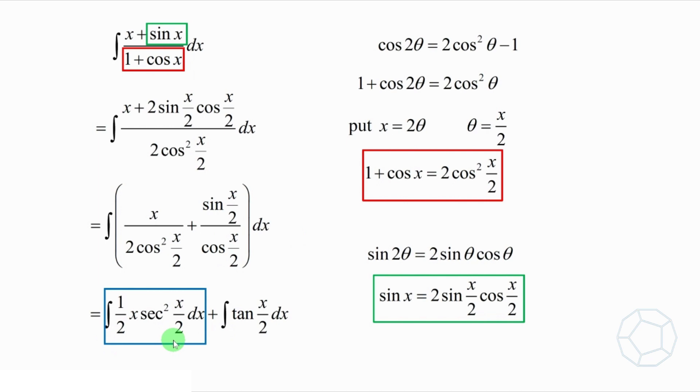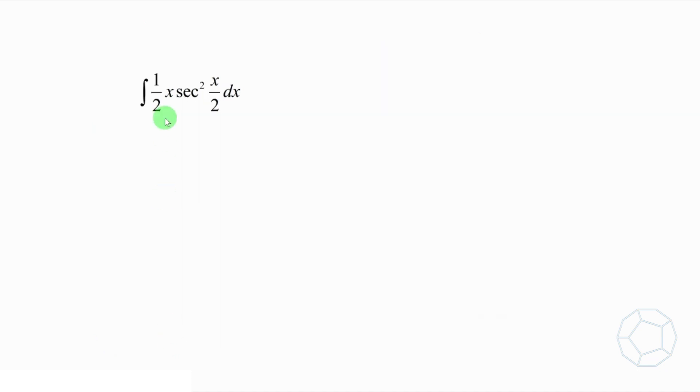Now, let's focus on the first integral. The integrand is a product of two types of functions, x and sec² x over 2. What method are we going to use? Right, we will do the integration by parts.